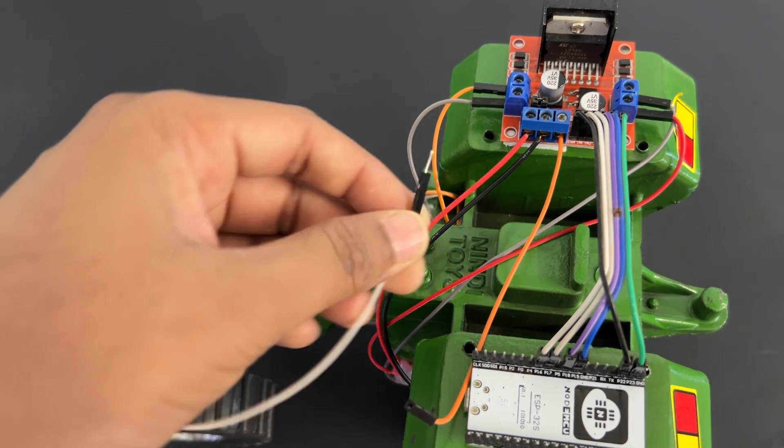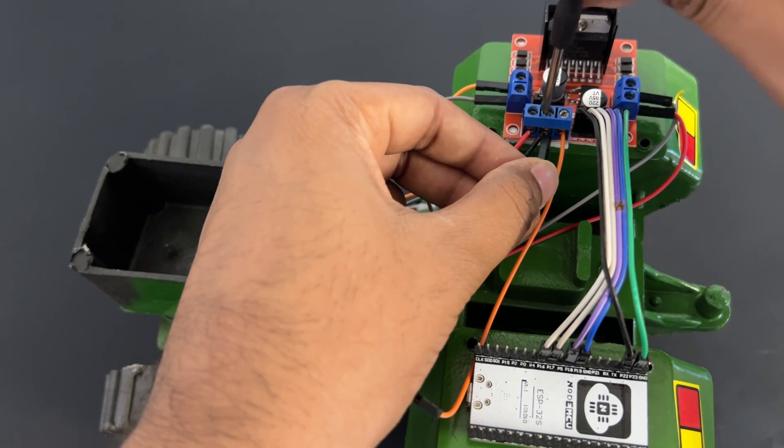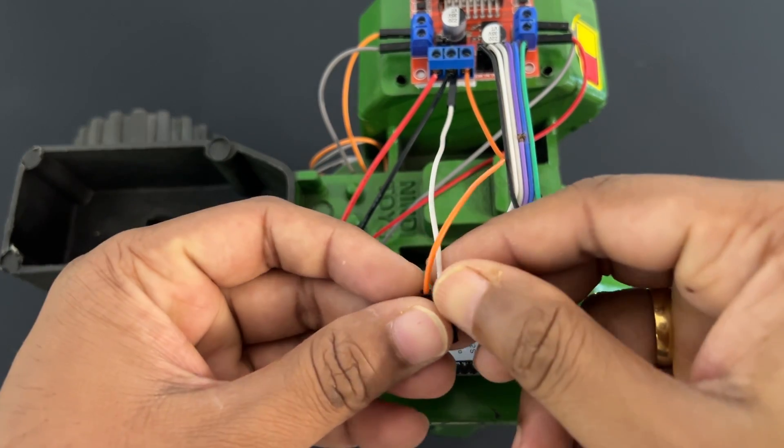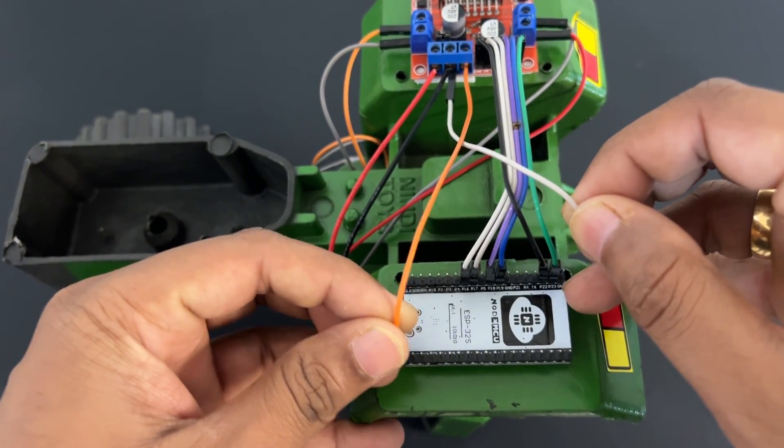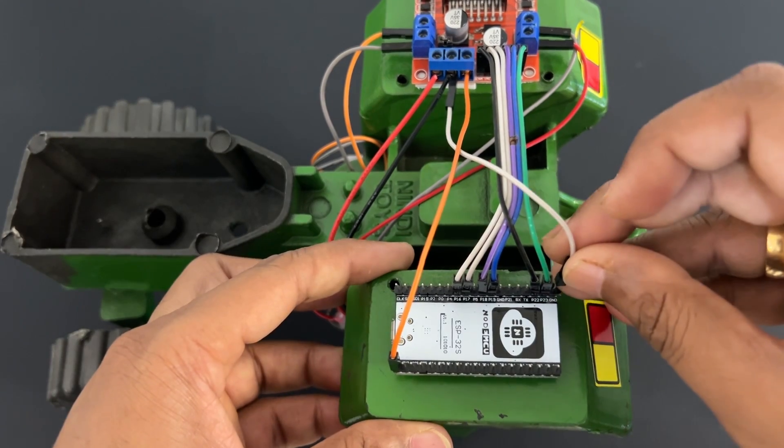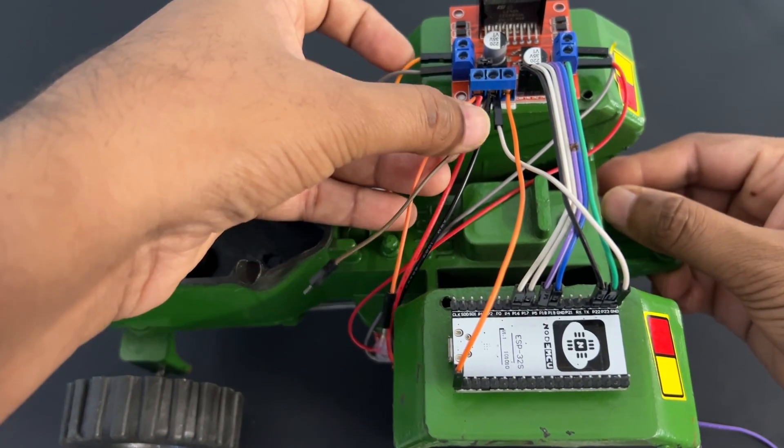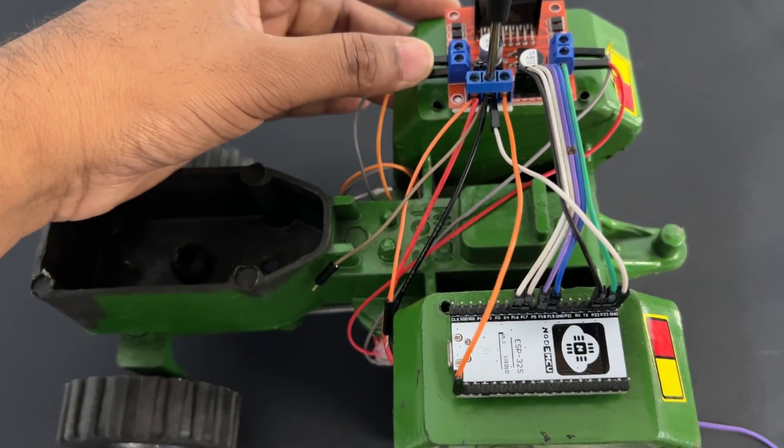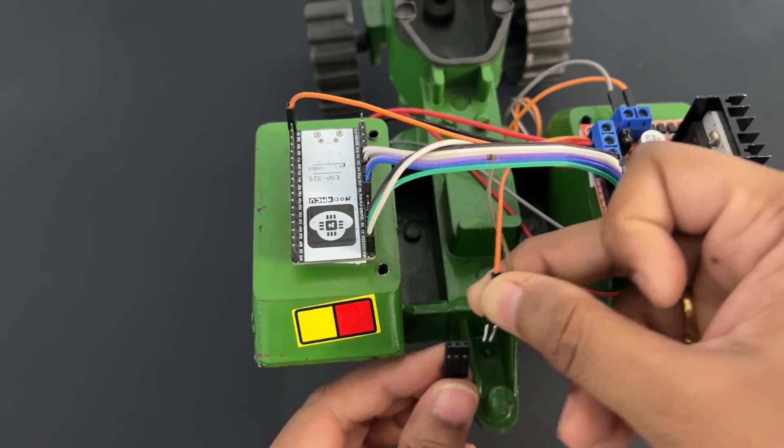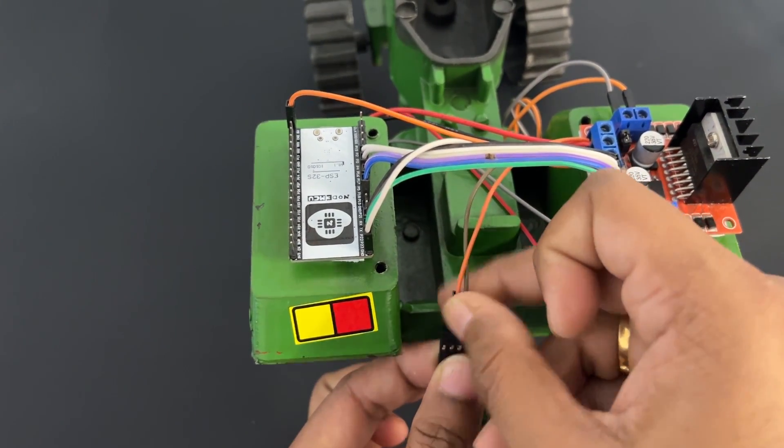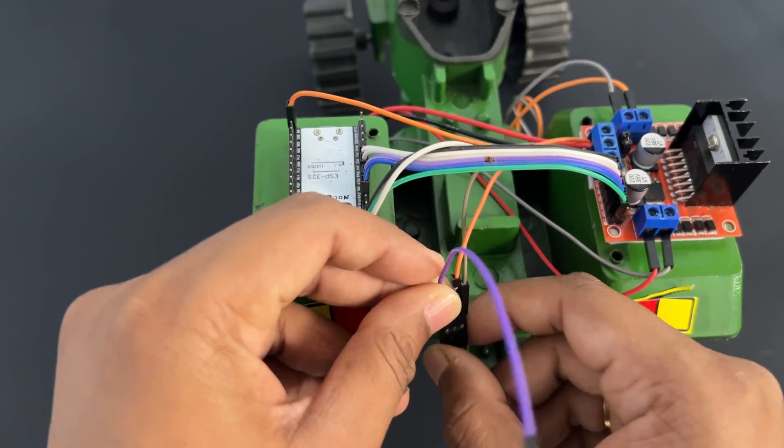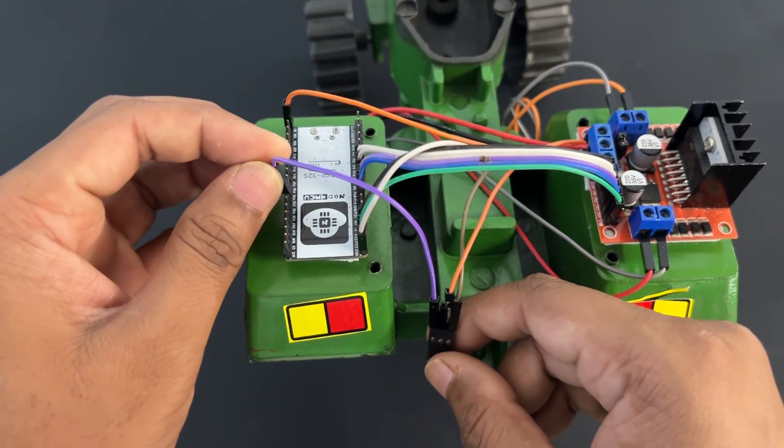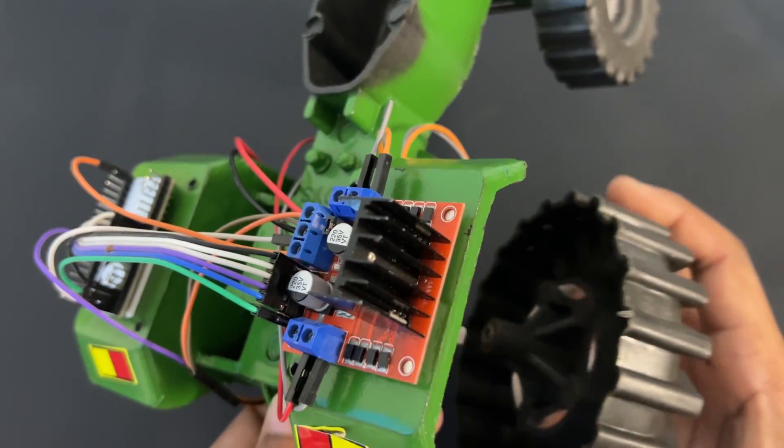We will take plus 5 volt and ground from L298N motor driver module and provide to ESP32 module through 5 volt and ground pin. Connect servo motor to ESP32 and also provide battery power to it. Now attach wheels.